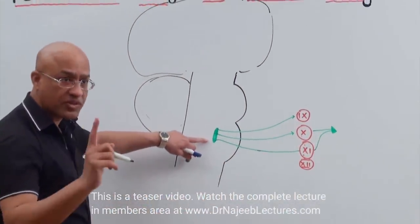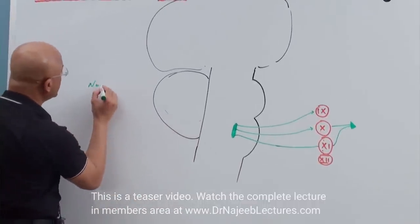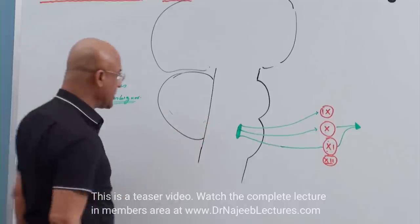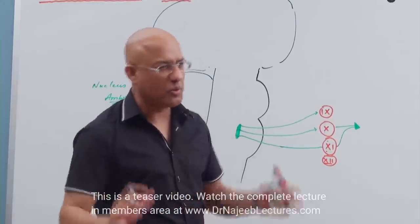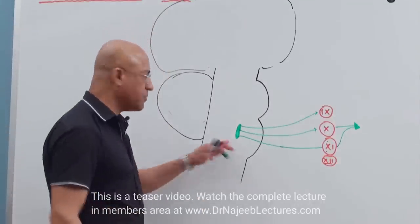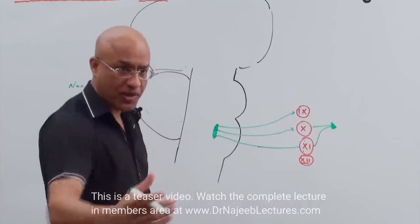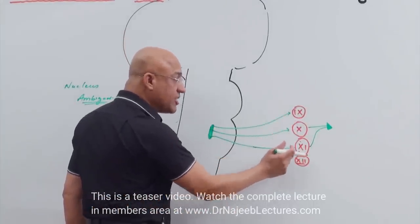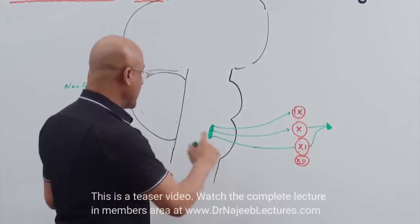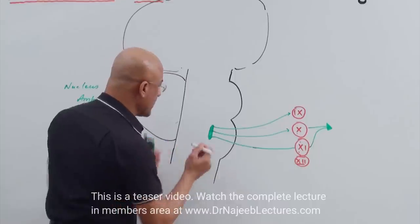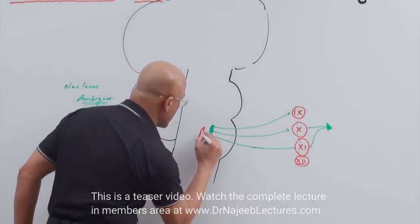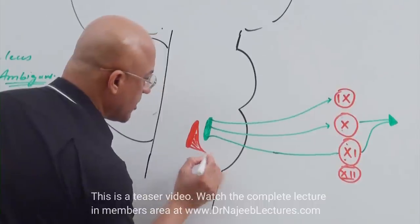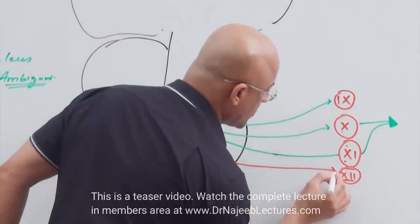Nucleus ambiguus — I think in the beginning doctors and neurologists were really confused about what it is, and rather than giving a clear name, they said it looks very ambiguous. So this is called nucleus ambiguus, and it has branchial motor fibres going to the 9th nerve, 10th nerve, and cranial part of the 11th nerve. Then there is also the hypoglossal nucleus, and fibres from the hypoglossal nucleus go to the hypoglossal nerve.